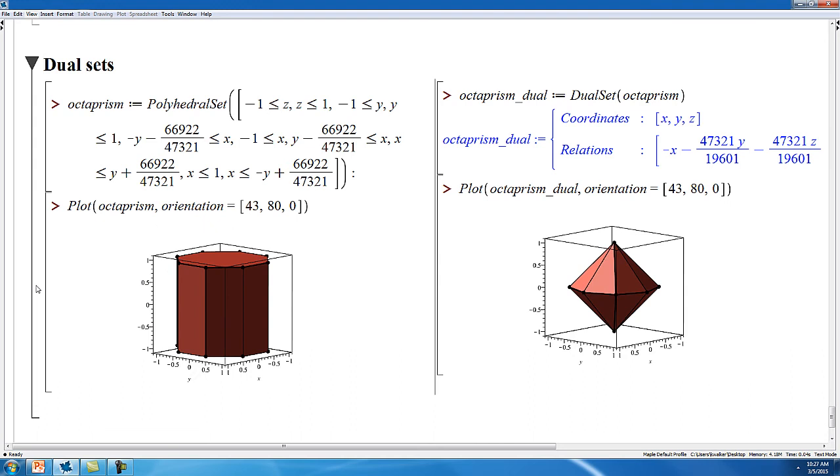You can compute the dual of a set where faces are mapped to vertices and vice versa. So this octagonal prism, for example, is mapped into this diamond shape.